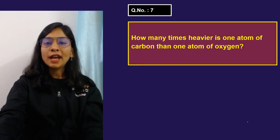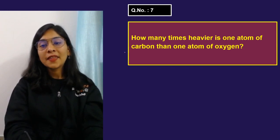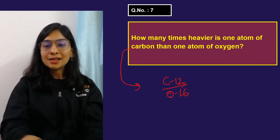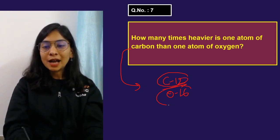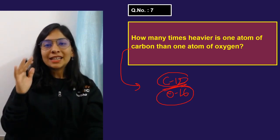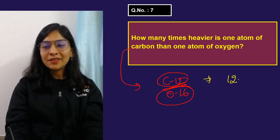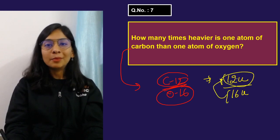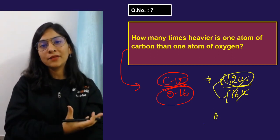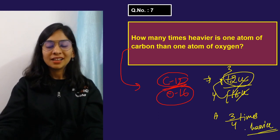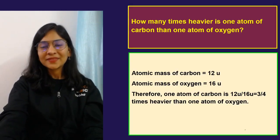Question: how many times heavier is one atom of carbon than an atom of oxygen? This is a comparison of mass. One atom of carbon = 12u; one atom of oxygen = 16u. Comparing: 12/16 = 3/4. So carbon is 3/4 times as heavy as oxygen — or equivalently, oxygen is heavier than carbon. That's a very simple calculation.